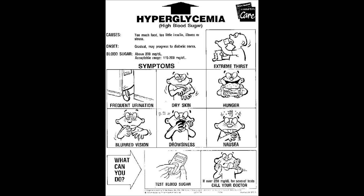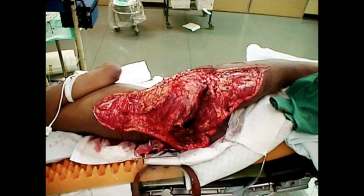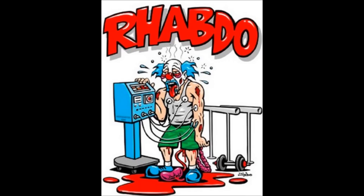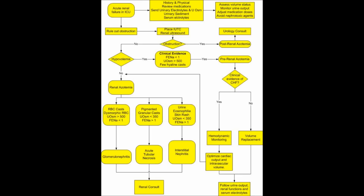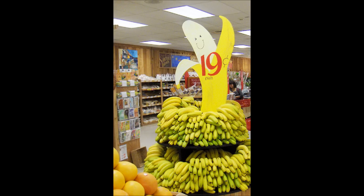The next cause is cellular damage, such as burns, trauma, or rhabdomyolysis. Another cause is the inability to excrete potassium, seen in renal failure and hypoaldosteronism.